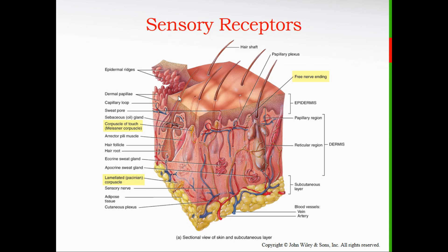Looking again at the cube of skin diagram: free nerve endings provide a sense of touch or pressure; Meissner's corpuscle, visible here, is a light touch receptor; and the lamellated Pacinian corpuscle, located deeper, is the vibration and pressure sensor. Merkel discs would also be present superficially, though they are not clearly visible in this particular diagram.